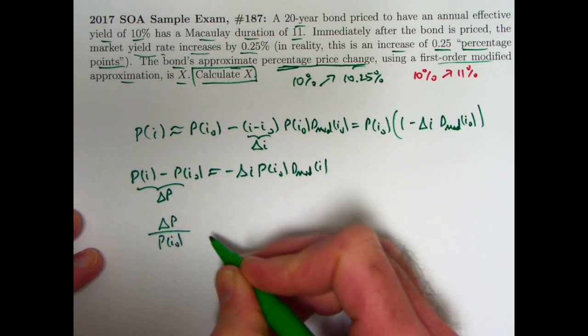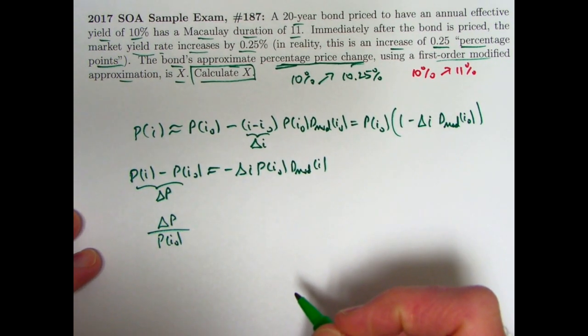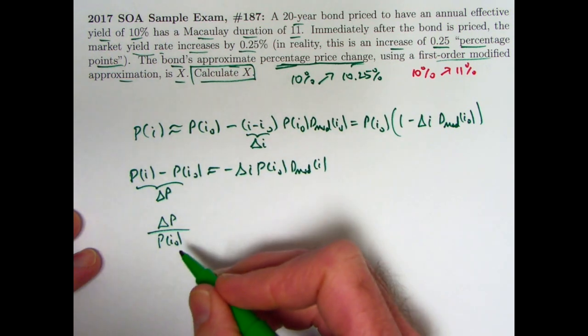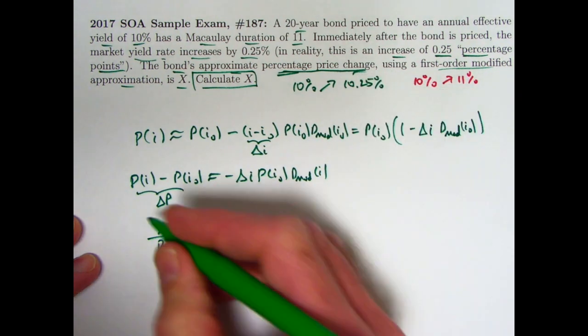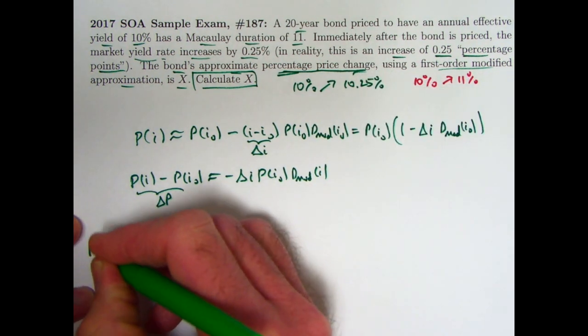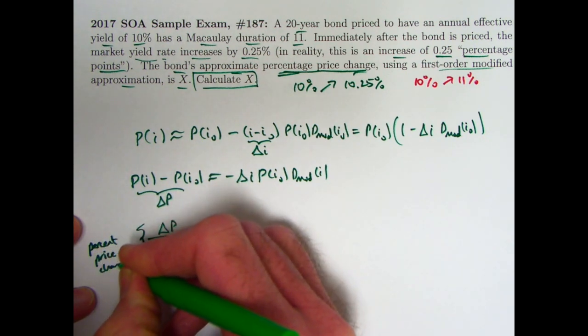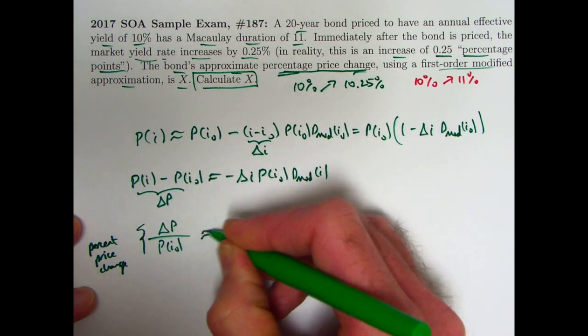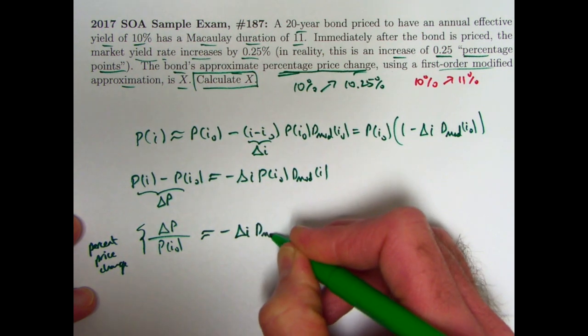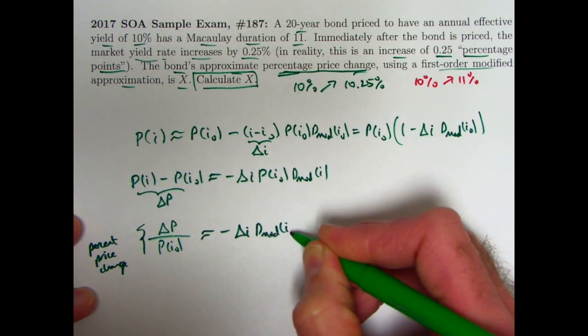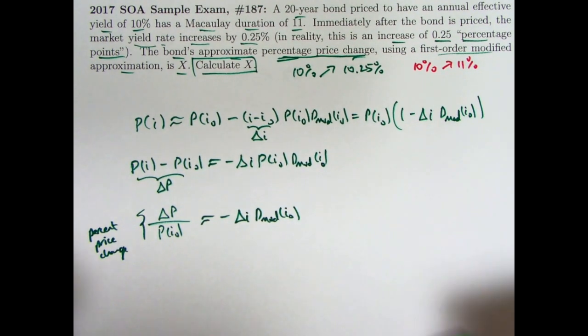Because when I do this, this ratio here, delta P, the change in the price, divided by the price at yield rate i₀, that expression represents what I want to find, the percent price change, the relative price change. This thing right here is the percent or relative price change. So all I need to do now is approximate that by taking negative of the change in i times the modified duration at i₀. That's all I need to use.